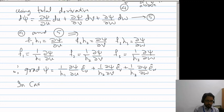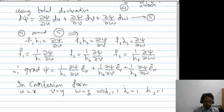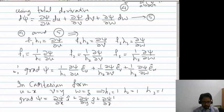In Cartesian form, u is x, v is y, w is z, so h1 will be 1, h2 will be 1, h3 will be 1, so grad psi will be ∂psi/∂x i cap plus ∂psi/∂y j cap plus ∂psi/∂z k cap, so we recover the Cartesian form, the definition of gradient in the Cartesian form.